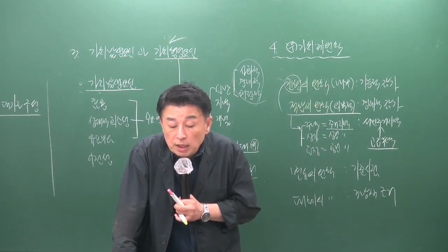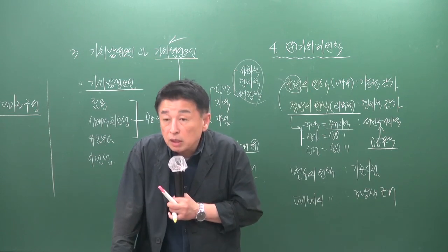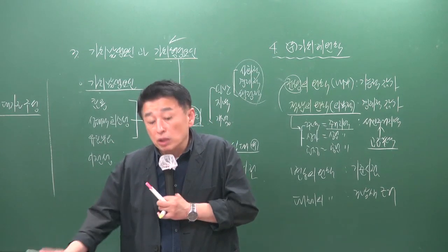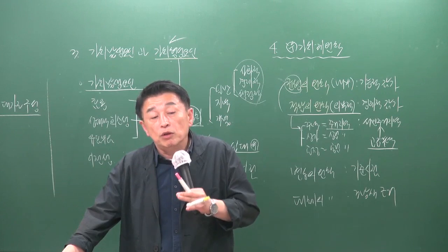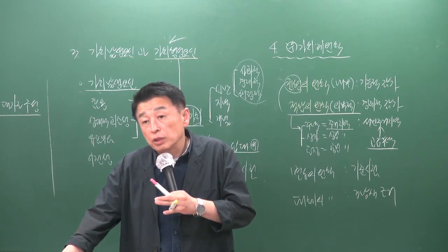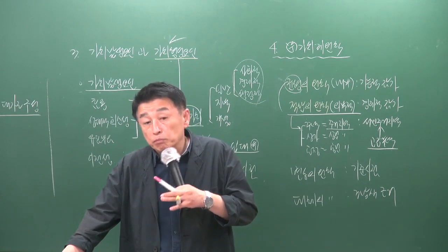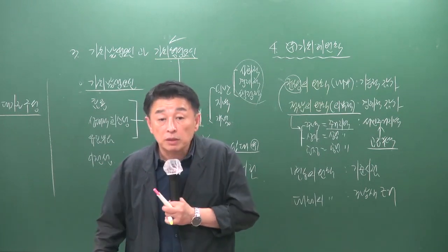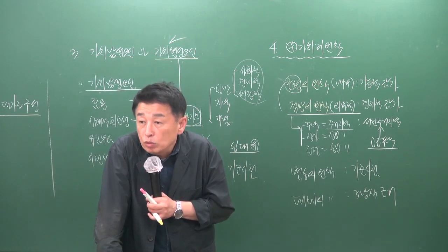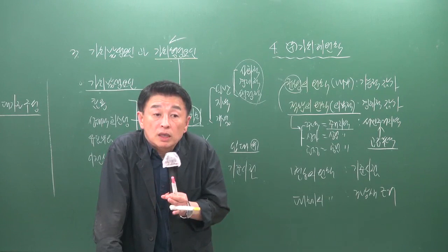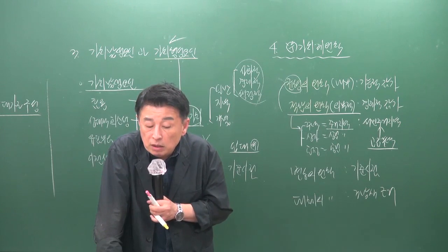11번 문제 3번 보기에서 부동산 가격은 대체성이 있는 다른 재화 및 부동산과의 상호작용 과정에서 형성된다는 것이 대체 원칙입니다. 대체 원칙이란 우리 집의 가치가 얼마냐는 것은 옆집이 얼마에 팔렸느냐가 기준이 된다는 것으로, 대상 부동산의 가치는 대체 관계에 있는 부동산 가치의 영향을 받아 결정됩니다.